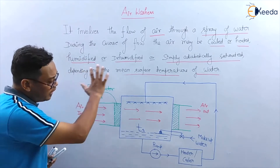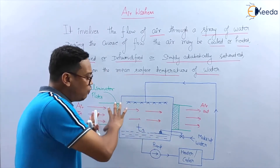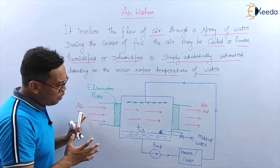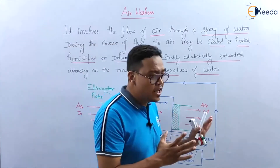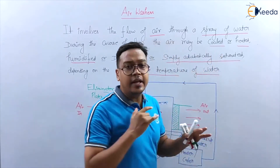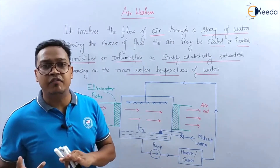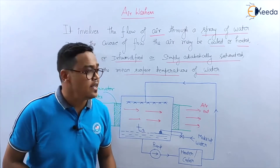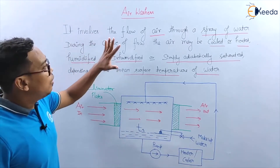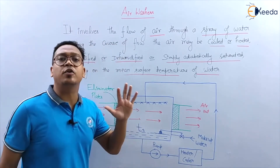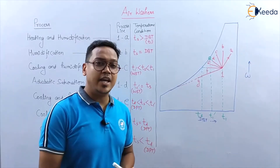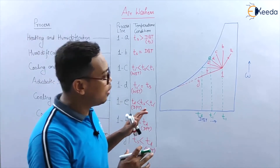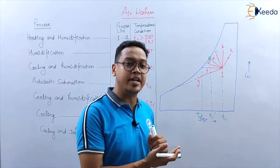I have explained how the air washer works. Now we will see all the processes — cooling, heating, humidification, dehumidification — on the psychrometric chart. Let's see all the processes of air washer on the psychrometric chart, one by one.